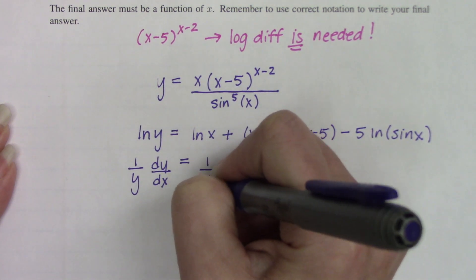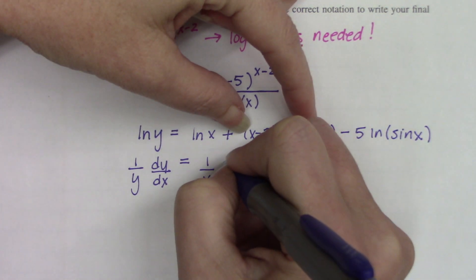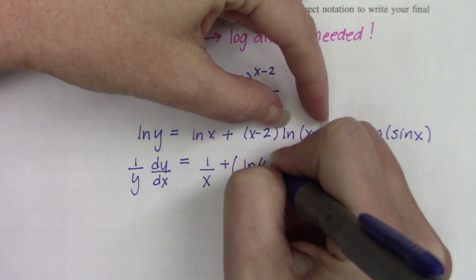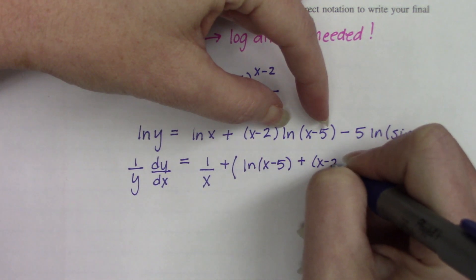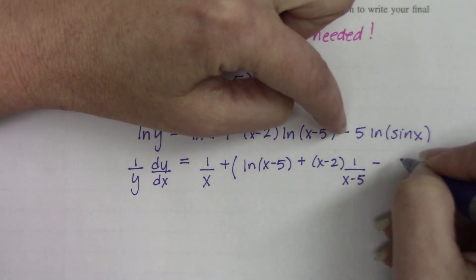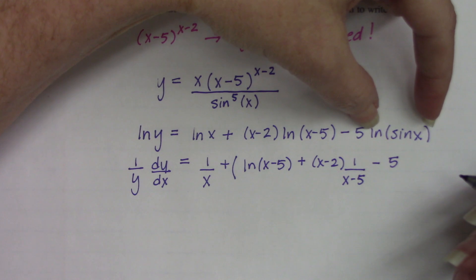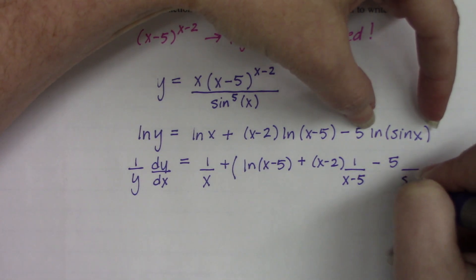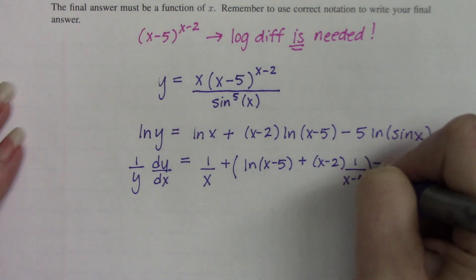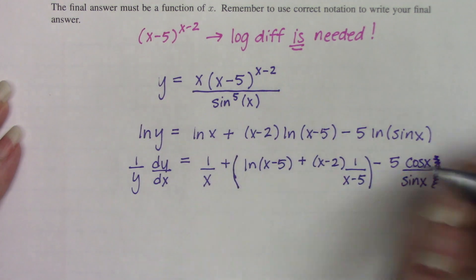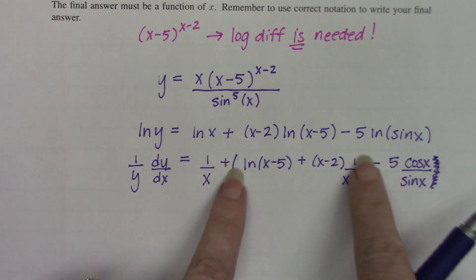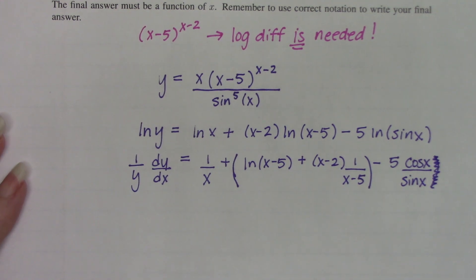The derivative of natural log of x is 1 over x. This middle term requires a product rule: the derivative of x minus 2 is 1 times natural log of x minus 5, plus x minus 2 times 1 over x minus 5. Then minus 5 times the derivative of natural log of sine of x, which is a chain rule: 1 over sin of x times the derivative of sin of x, which is cosine x. The parentheses here aren't required, but I use them to isolate the product rule visually.